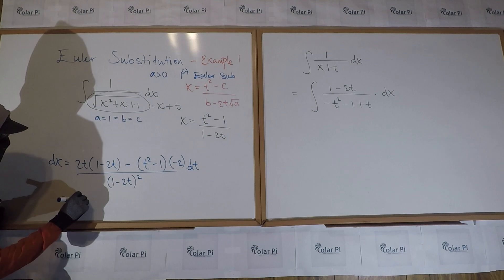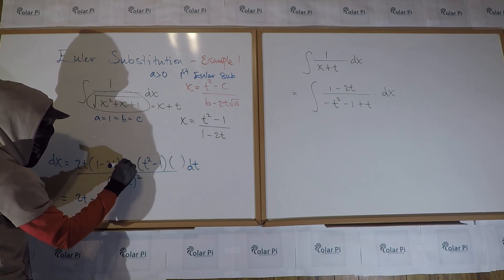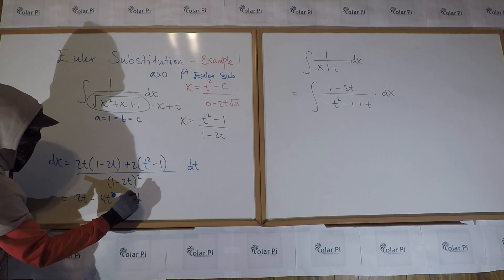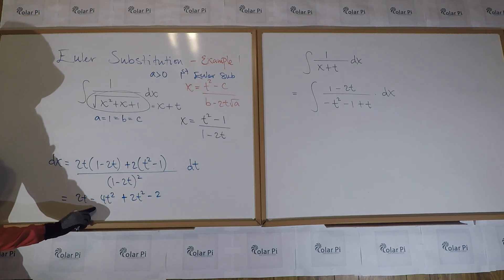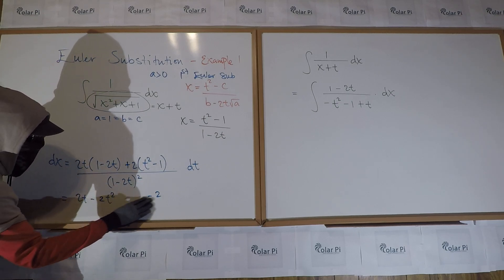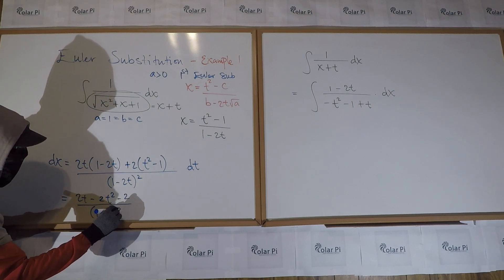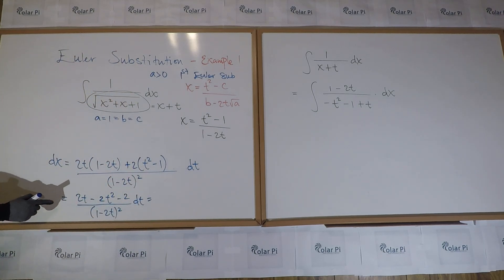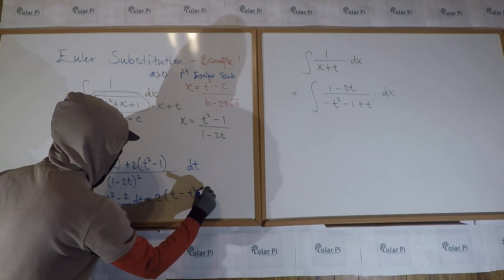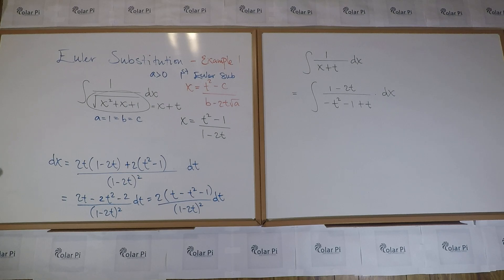So DX will equal two T times one minus two T minus T squared minus one times negative two divided by one minus two T all squared times DT. I hope this simplifies. Does it? Yes. So we get two T minus four T squared, and then the minus minus from the two here, I could just write a plus two here. So now it's plus two T squared minus two. So minus four T squared plus two T squared is just minus two T squared. And so that allows me to get rid of this and just write a minus two on the tail end here. And then we have that divided by one minus two T squared DT. But wait, this in turn is equal to, I can factor out a two from the numerator. So when I do, I'm going to get two times T minus T squared minus one over one minus two T squared DT. So this is DX.